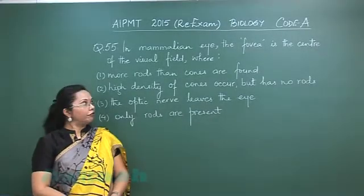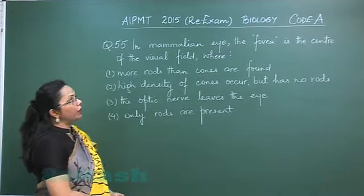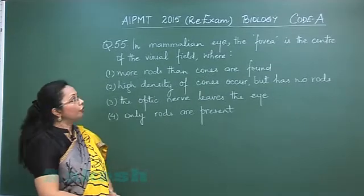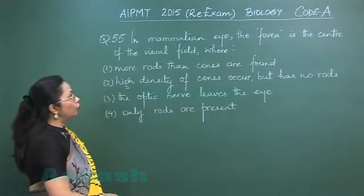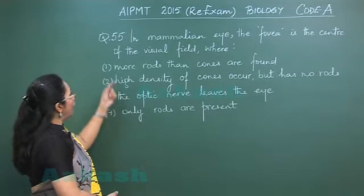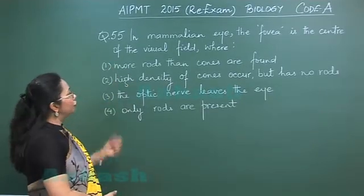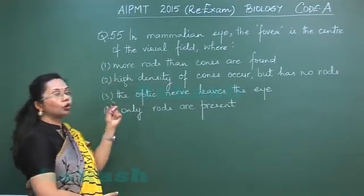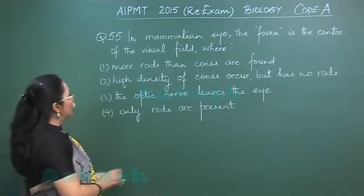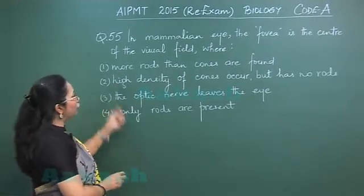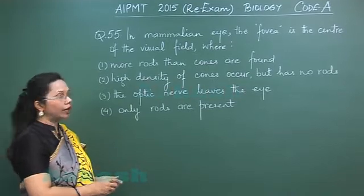Question 55: In the mammalian eye, the fovea centralis is the region which has only cones and no rods. So our second option — high density of cones — occurs here.